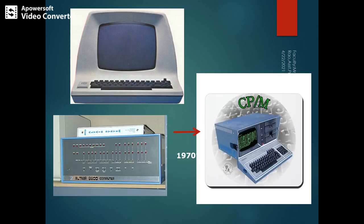The third generation was from 1965 to 1971, where integrated circuit based technology was used. Computers in this generation used integrated circuits, or ICs, in place of transistors. Integrated circuits contain many transistors, resistors, and capacitors along with the circuitry on a single chip. Using ICs, remote processing, timesharing, and multiprogramming operating systems could be performed. High-level languages like FORTRAN, COBOL, Pascal, and ALGOL were used in this generation.